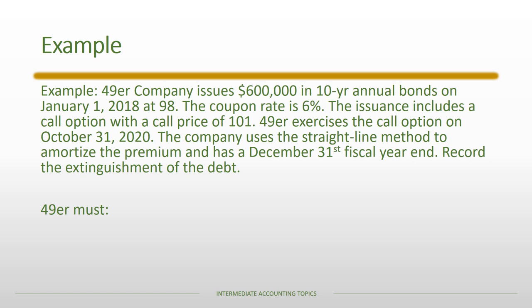As an example, 49er Companies issues $600,000 in 10-year annual bonds on January 1st, 2018 at 98. The coupon rate is six percent and the issuance includes a call option with a call price of 101. 49er exercises the call option on October 31st, 2020 and uses the straight-line method to amortize the discount. So how do we record the extinguishment of the debt?